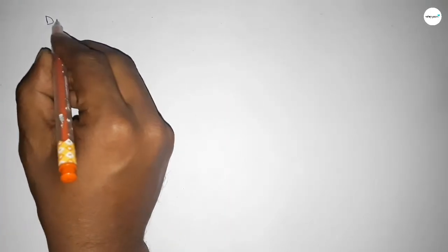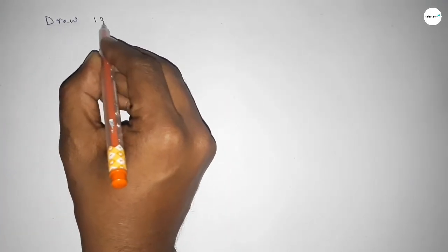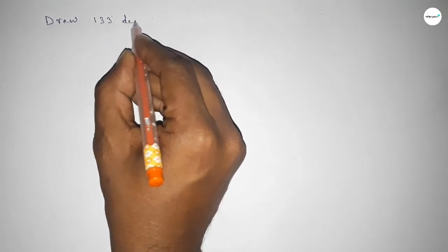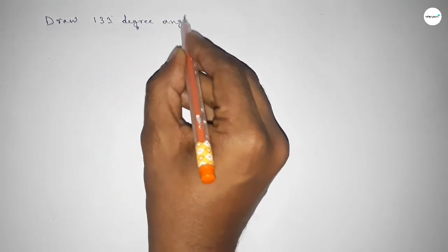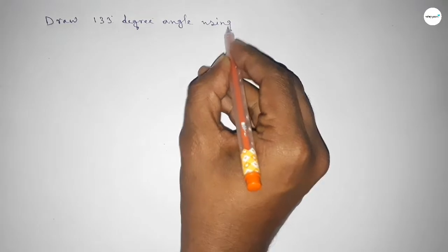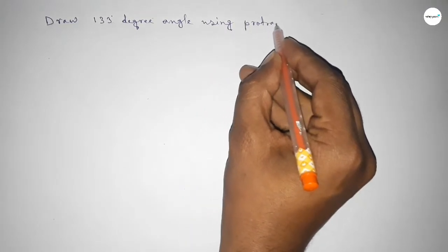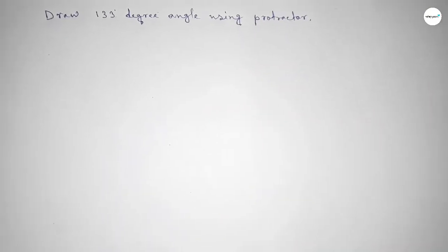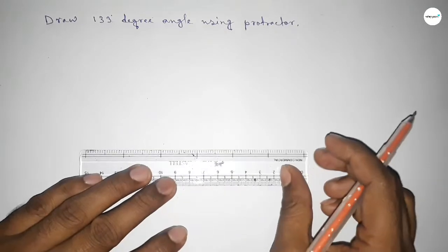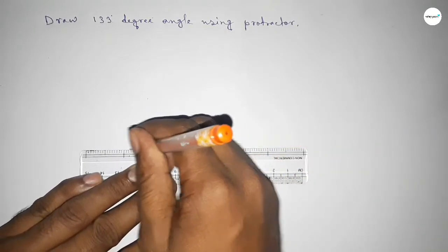Hi everyone, welcome to sys chair classes. Today in this video we have to draw a 133 degree angle by using protractor. So let's start the video. First of all, we have to draw here a straight line of any length.